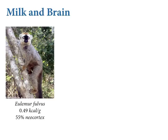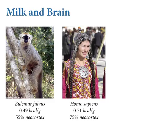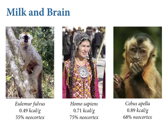Across different primate species, you can measure milk composition. We're going to look at energy in milk — kilocalories per gram — which varies a lot across mammals. A typical lemur has about 0.5 kilocalories per gram of milk, and 55% of its brain mass is neocortex. Humans have more enriched milk than most prosimians, and we are very neocortex-heavy — three-quarters of our brain is neocortex by mass.